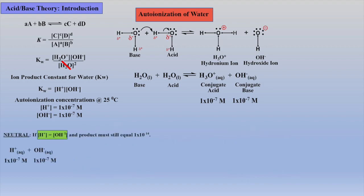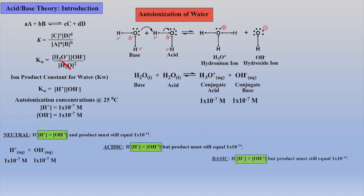Now we can define a neutral solution when proton and hydroxide ion concentrations are equal. An acidic solution as a solution that has the proton concentration greater than 1 times 10 to the minus 7, and a basic solution as a solution that has hydroxide ion concentration greater than 1 times 10 to the minus 7, but their product must always be 1 times 10 to the minus 14.